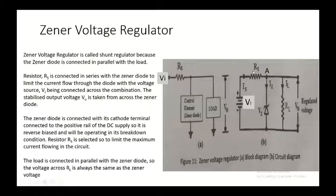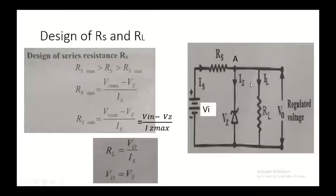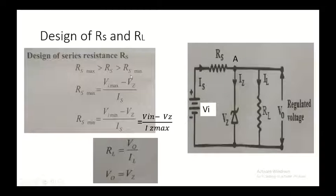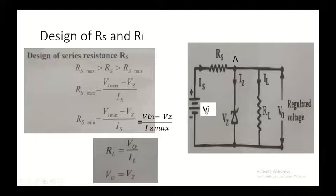We need to select RS to limit the maximum current flowing through the circuit. Taking the mesh equation: VI minus IS·RS minus VZ equals 0, which gives VI minus VZ equals IS·RS. Therefore RS equals (VI minus VZ) divided by IS. VI max is the maximum input voltage; VI can be varied from a minimum to a maximum value, and as a result we will also have a minimum Zener current IZ min and a maximum IZ max.